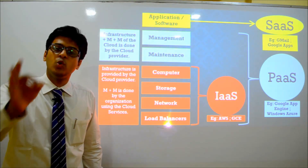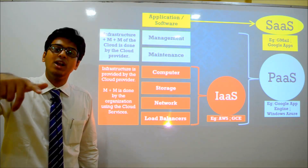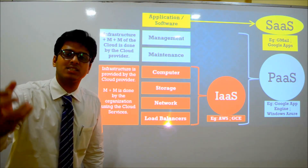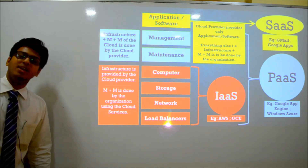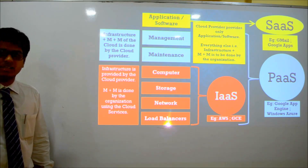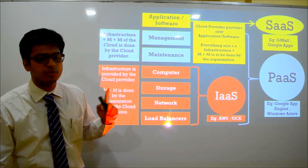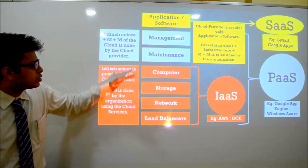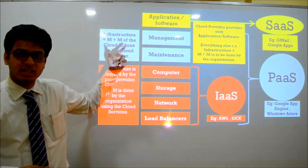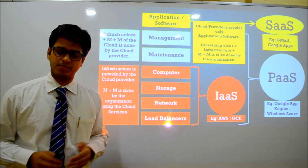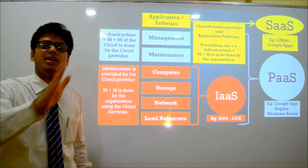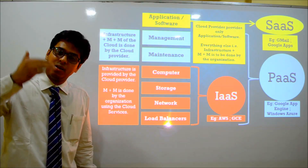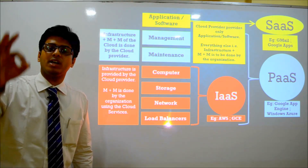So Google App Engine is Platform as a Service, and Google Apps (Gmail) is Software as a Service. In SaaS, the cloud provider provides only the application or software; everything else — infrastructure plus management plus maintenance — is the responsibility of the organization or user. Quick revision: if only infrastructure is provided without maintenance and management, that is IaaS. If infrastructure along with maintenance and management is also provided, that is PaaS. But if the infrastructure and maintenance are yours and only the software belongs to someone else, that is Software as a Service.